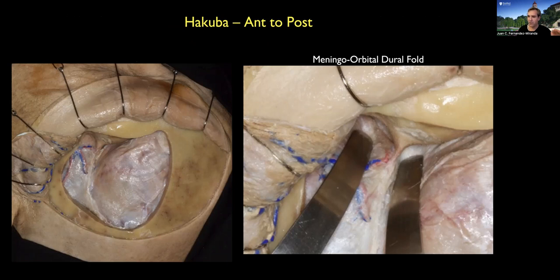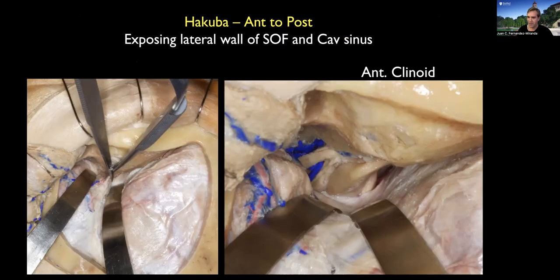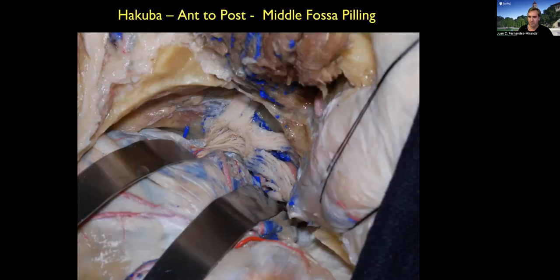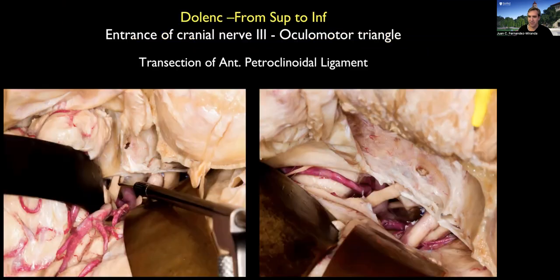It starts with a craniotomy. We do the peeling of the temporal lobe dura to expose the meningo-orbital dural fold. Once we transect this fold, we can expose the clinoidal process and the superior orbital fissure very well. We do a clinoidectomy extradurally, which exposes the clinoidal segment of the carotid artery and the optic nerve within the optic canal, which is now unroofed. We then continue peeling the middle fossa from anterior to posterior all the way to Meckel's cave if needed.